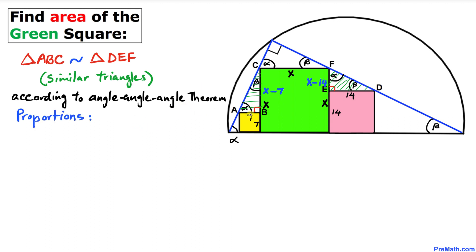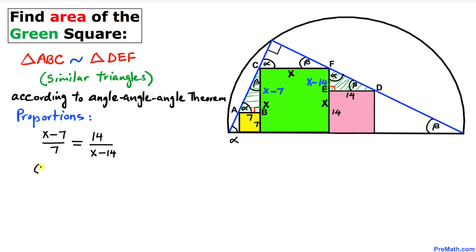Let's equate the ratios of the corresponding side lengths. For triangle ABC we get the ratio (x minus 7) divided by 7, and for triangle DEF the ratio is 14 divided by (x minus 14). Cross-multiplying gives us: (x minus 7) times (x minus 14) equals 14 times 7, which is 98.